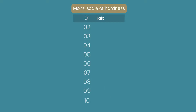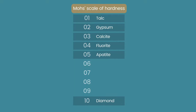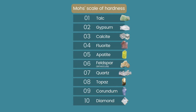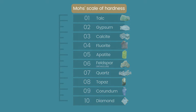Hardness 1 is talc, 10 is diamond, and other common minerals fall in between. The Mohs Scale of Hardness is not a measurement but rather an orderly list of minerals with distinct hardnesses from one another.